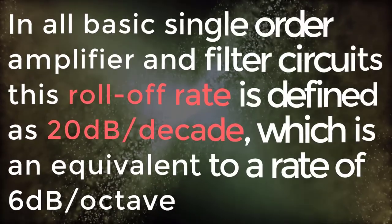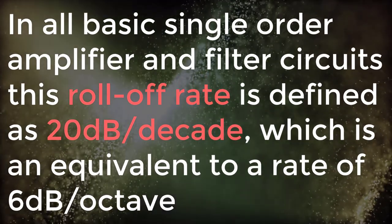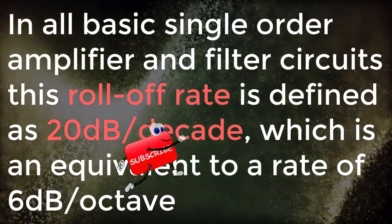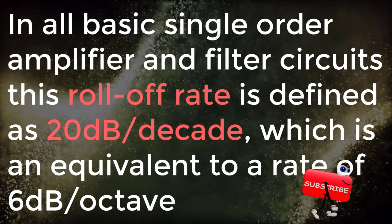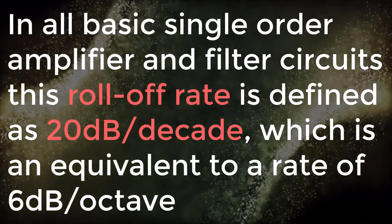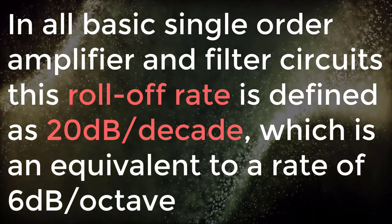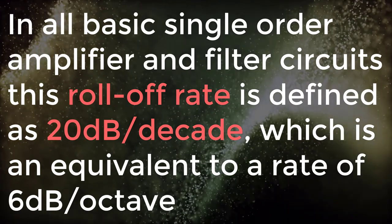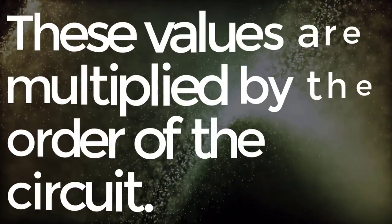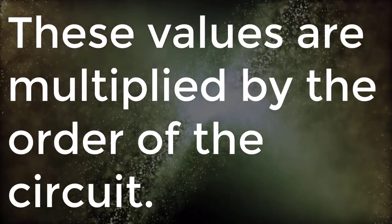In all basic single order amplifier and filter circuits, this roll-off rate is defined as 20 dB per decade, which is equivalent to the rate of 6 dB per octave. These values are multiplied by the order of the circuit.